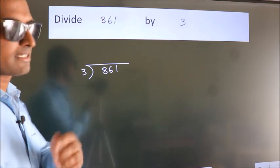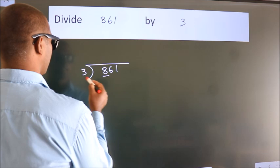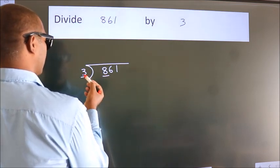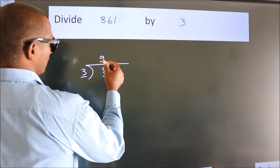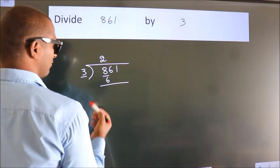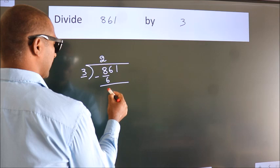Next, here we have 8, here 3. A number close to 8 in the 3 table is 3 times 2, which is 6. Now we should subtract, we get 2.